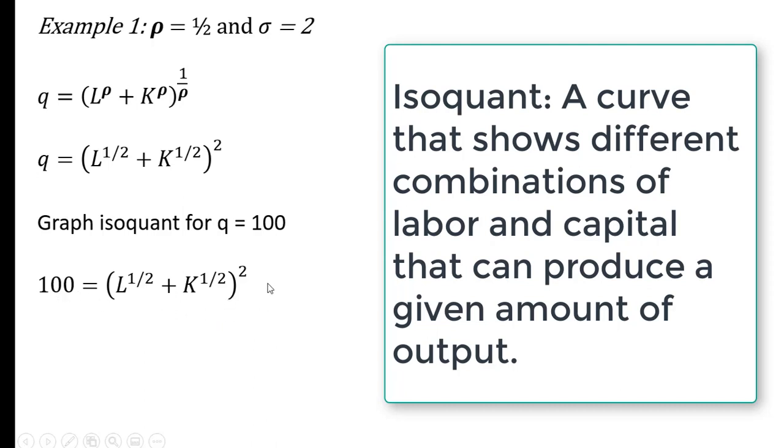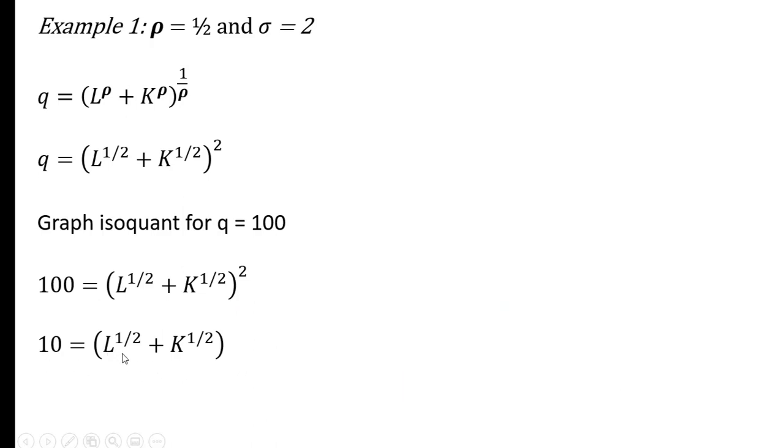So we're going to set the output on the left-hand side equal to 100 and we're going to solve for k. I'm going to take the square root of both sides to get rid of this square term over here. Doing that, we get this. And now I'm going to subtract L to the 1 half power from both sides. Basically, we're solving for k, so subtracting L to the 1 half from both sides. We get this result. And now I'm going to square both sides to get rid of this k to the 1 half term. So squaring both sides, we're left with the equation for the isoquant when q equals 100.